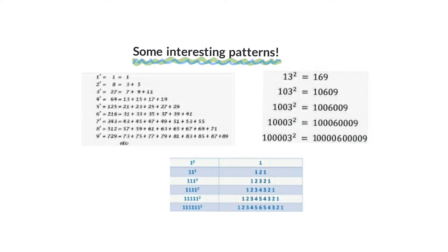This last slide shows some interesting things you can do with numbers and the beautiful patterns you can make. Look at the squares of one, then eleven, then columns of elevens — and then the pattern with thirteens. It's interesting to see what you can do and the interesting ways you can write square numbers. Hope you enjoyed this introduction.